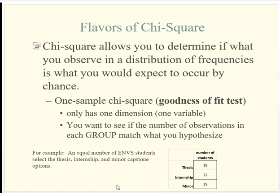We can see the counts aren't exactly equal, but statistically speaking, if we expanded to the larger population of all environmental studies students, would we see a relatively equal proportion in each category? We had 60 students total. Testing the null hypothesis of no preference among the three options, I'd expect 20, 20, and 20. Then I use the difference between the expected 20 and what I observed, square it, divide by the expected, and get a chi-square value for each cell. Sum them all up to get the test statistic.